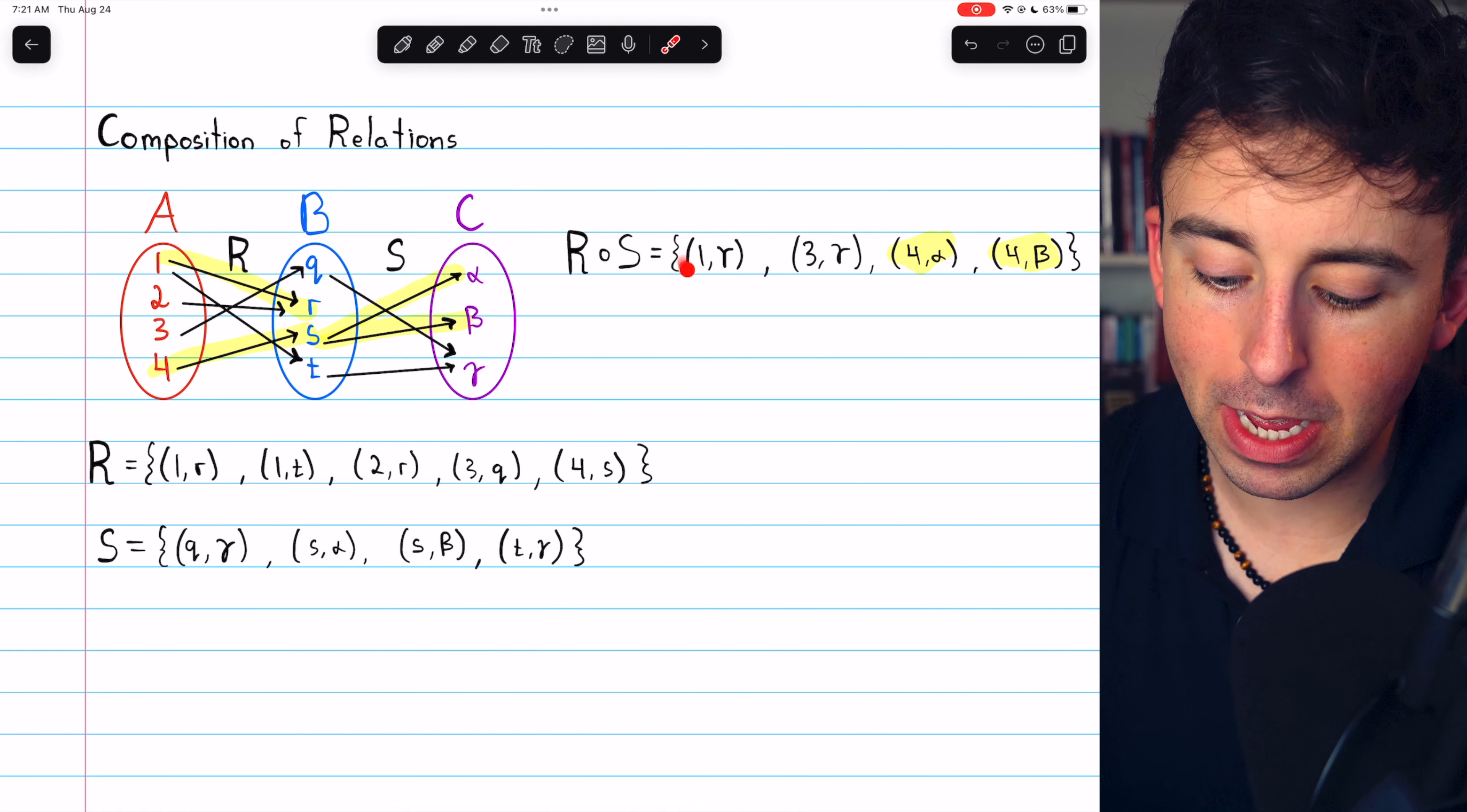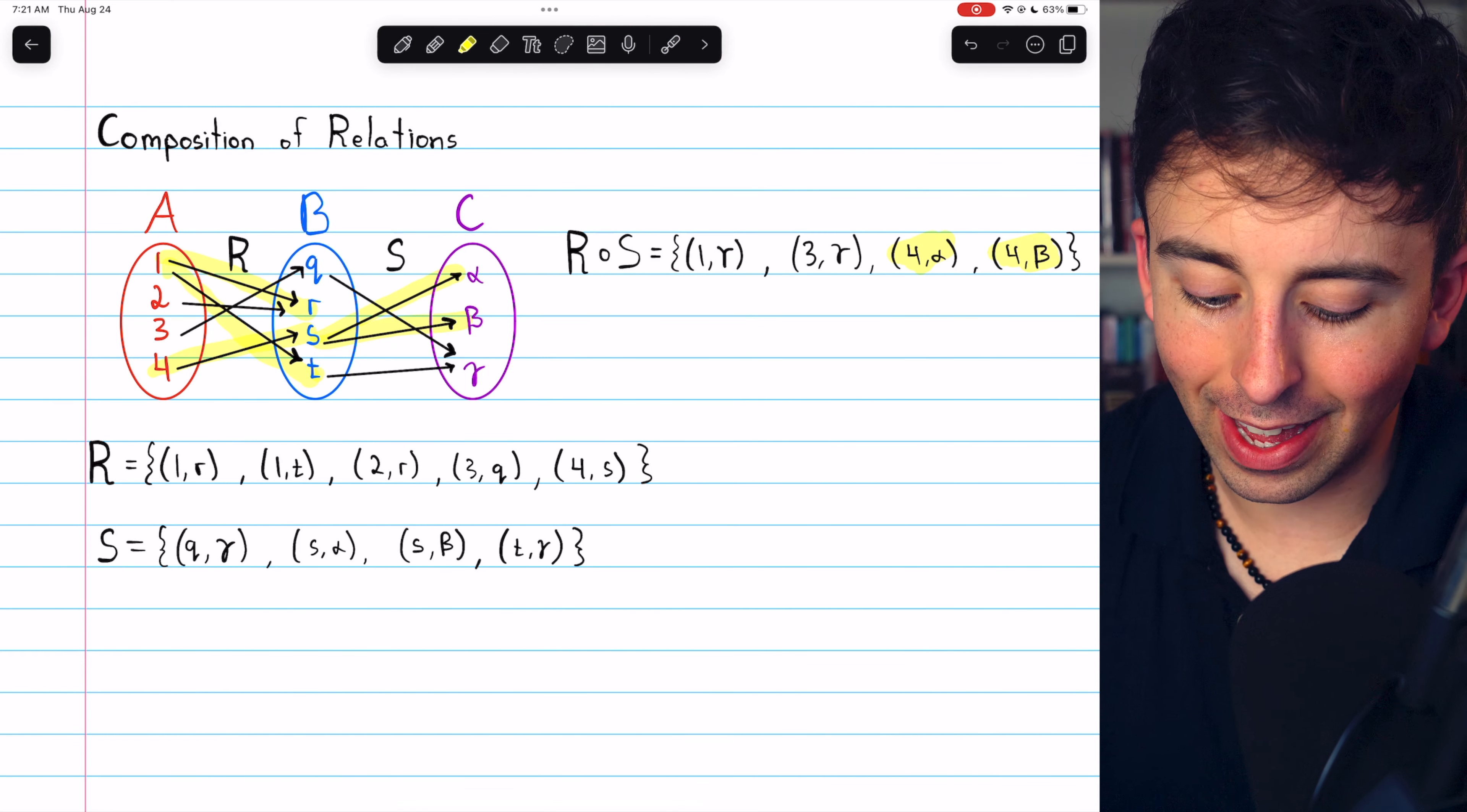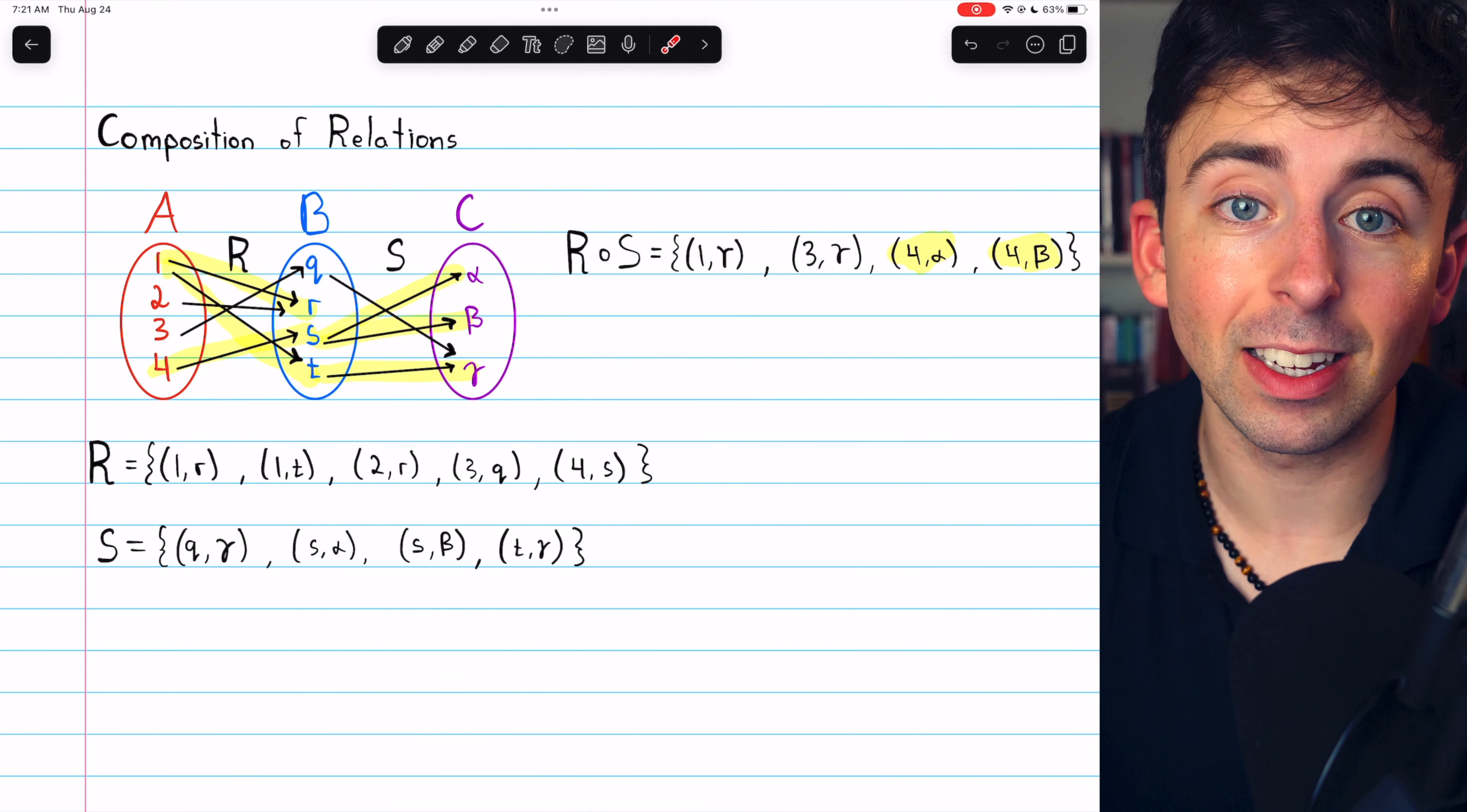So 1 only appears in the composition once, given that 1 relates to T, and then T relates to gamma. So that's the only time that 1 appears in the composite relation.